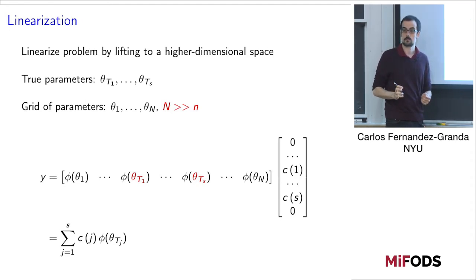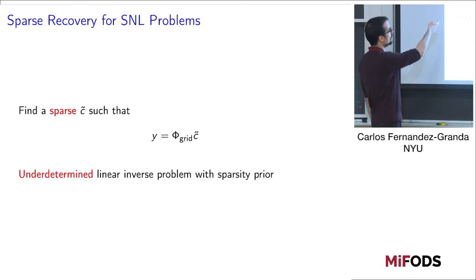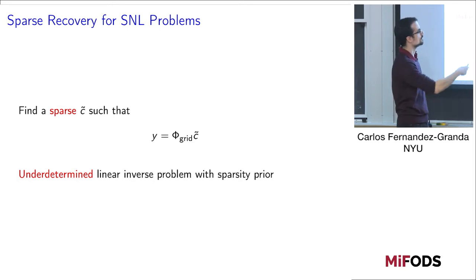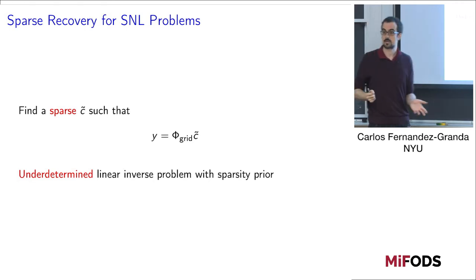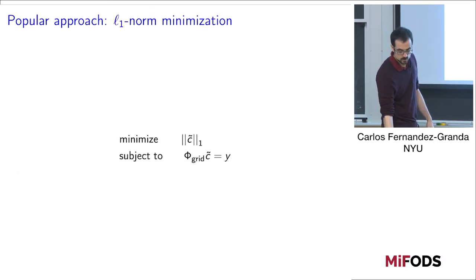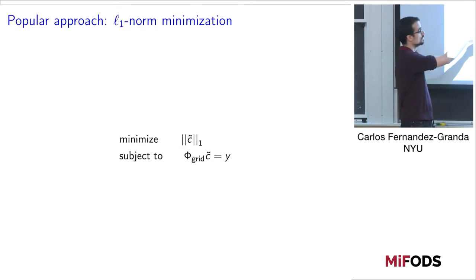Now we have a highly underdetermined but linear inverse problem with sparsity constraints. The idea is to find the sparse vector of coefficients such that y equals this discretized matrix of Green's functions times that vector. It's an underdetermined linear inverse problem with a sparsity prior. A popular approach, as most of you know, is L1 norm minimization, where we choose the set of coefficients with the smallest L1 norm that is consistent with our data.